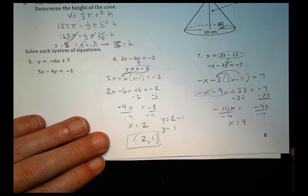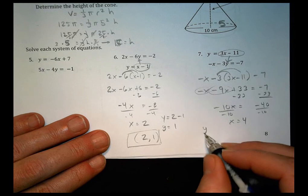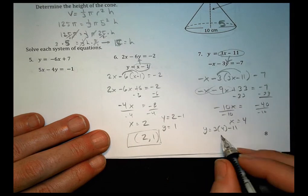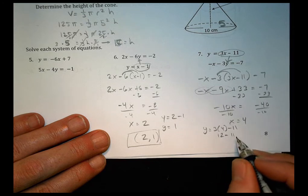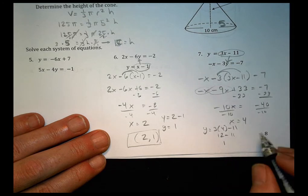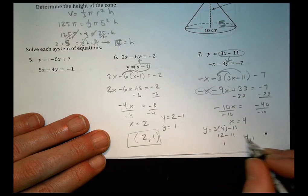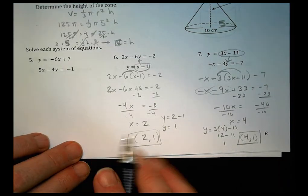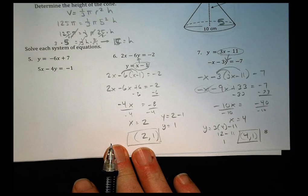To solve for the y value, we can do y equals 3 times 4 minus 11. 3 times 4 is 12 minus 11. 12 minus 11 is 1. So our values are 4 comma 1, and there's a solution there. That's 6 and 7. I'll leave you with 5 on your own. Hope that helps out a little bit, and we'll see you next time.